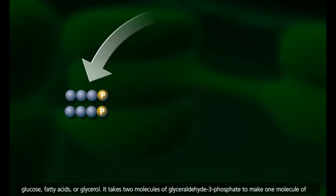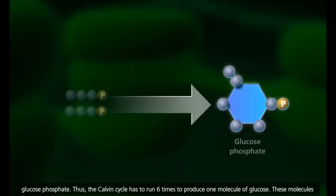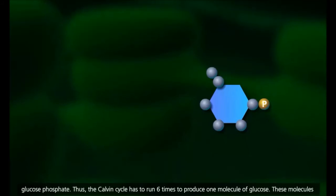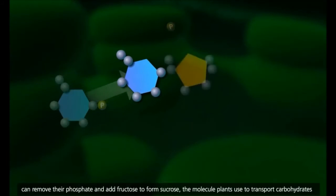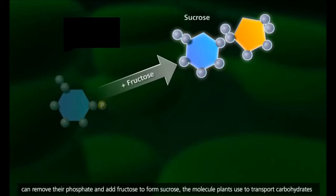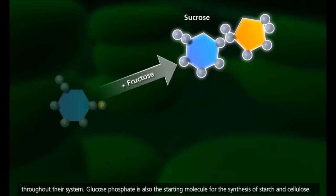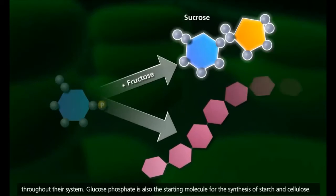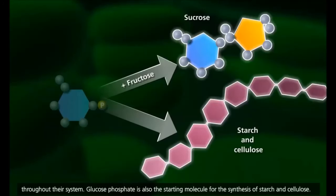It takes two molecules of glyceraldehyde-3-phosphate to make one molecule of glucose phosphate. Thus, the Calvin cycle has to run six times to produce one molecule of glucose. These molecules can remove their phosphate and add fructose to form sucrose, the molecule plants use to transport carbohydrates throughout their system. Glucose phosphate is also the starting molecule for the synthesis of starch and cellulose.